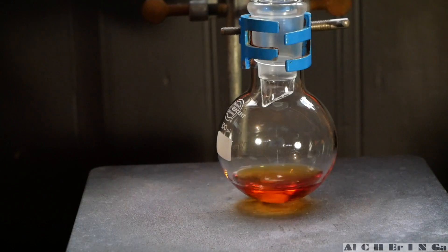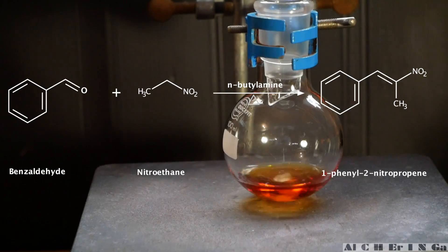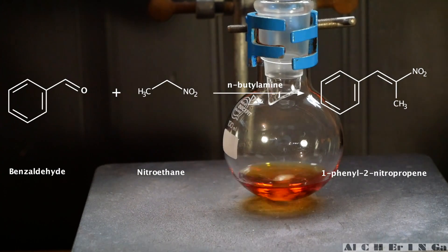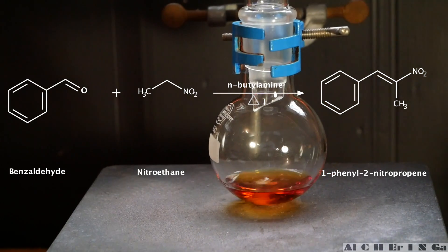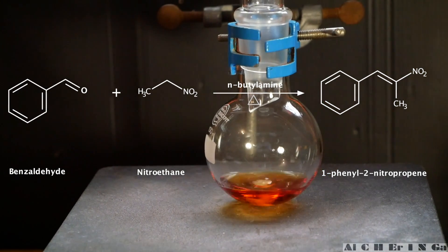Now, time for the chemistry. In brief, benzaldehyde and nitroethane react in the presence of N-butylamine base to form 1-phenyl-2-nitropropene. Interestingly, 1-phenyl-2-nitropropene is the only major product formed when N-butylamine base is employed.